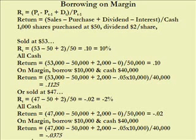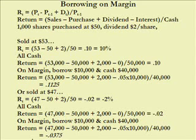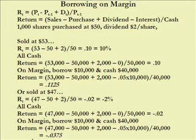But now let's do this on margin. Again, borrowing $10,000, putting only $40,000 in — again a loss of 3, but a gain of 2 and a minus $500 in interest. We divide by the dollars put in, $40,000, giving us a loss of 3 and 3 quarters versus the minus 2, showing again why margin is called leverage: making good things better, but bad things worse.